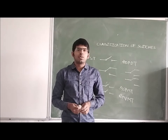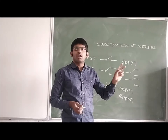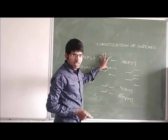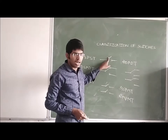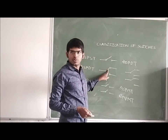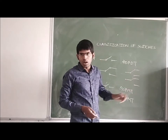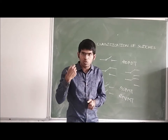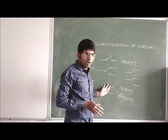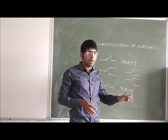We have different types of switches. We are classifying the switches according to the number of poles and number of throws. If we have only one pole in the switch, then we call it a single pole switch. If we have two poles, then it is called a double pole switch. If we have more than two poles, then we call that a multi-pole switch.